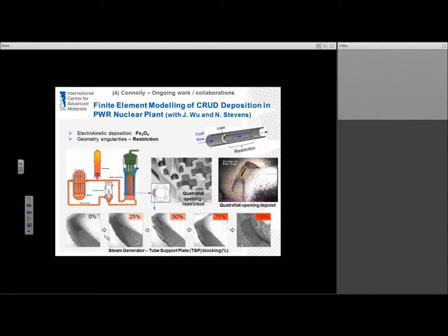The next thing I want to talk about—we've talked about using exotic kit and new facilities to look at corrosion degradation. One thing I haven't talked about is modeling work. Let me speak briefly on some of the finite element modeling work that we're doing here with J.J. Wu and Nick Stevens. What we're looking at is we're trying to model CRUD deposition in a PWR nuclear plant. CRUD is very detrimental to the performance of the plant, and it usually occurs in a geometric singularity or restriction. These are quite plentiful in the nuclear plant, especially on the steam generator tubing. This is the steam generator tubing, and we see an area at the quatrefoil opening, which is a restriction.